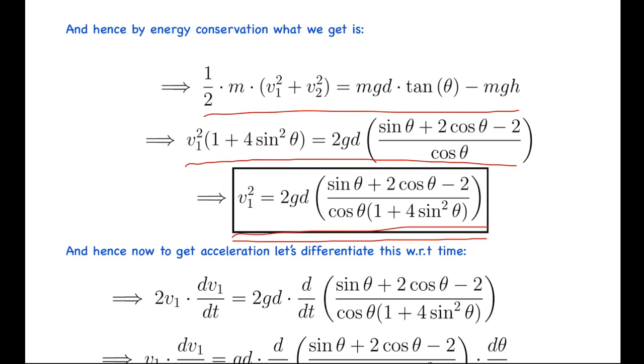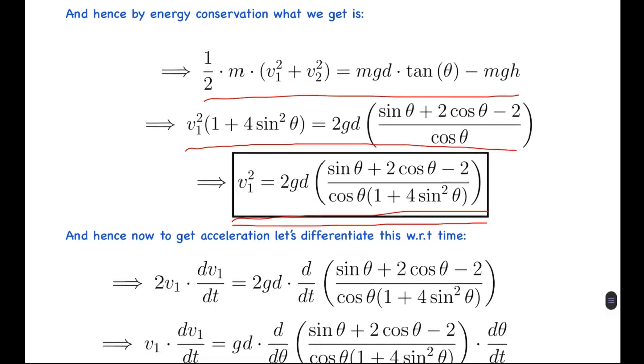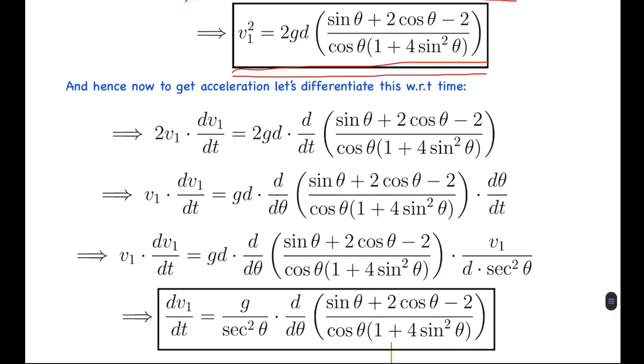You can work through the calculations on your own. Now, just as I said, by differentiating this we would get the expression for acceleration. Differentiating this with respect to time t: 2v₁ × dv₁/dt = 2gd × d/dt of this expression. This can be written by chain rule as d/dθ of this times dθ/dt.